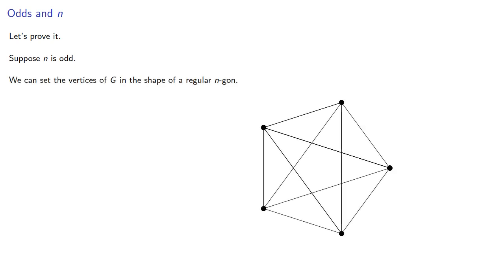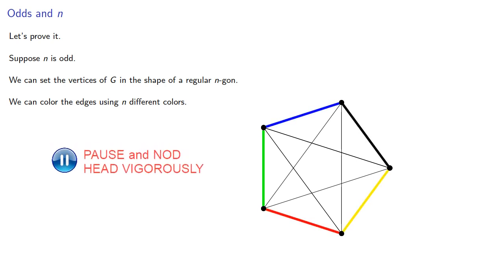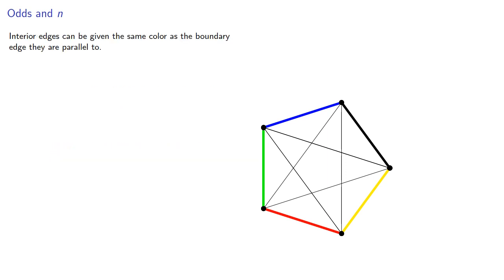Let's prove it. Suppose n is odd. While the position of the vertices is arbitrary, we can set the vertices of our graph in the shape of a regular n-gon. We can then color the edges using n different colors. Interior edges can be given the same color as the boundary edge they are parallel to. Consequently, an n coloring exists.